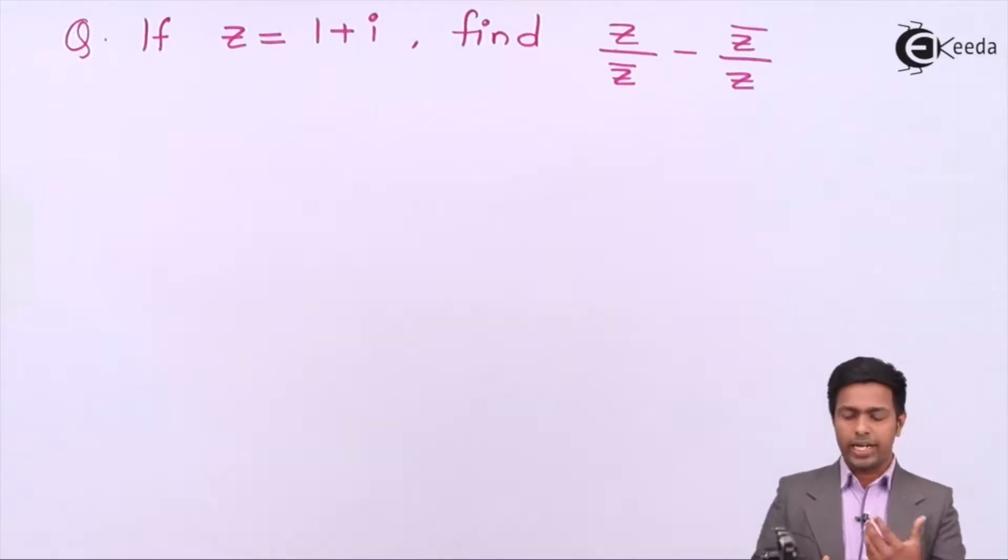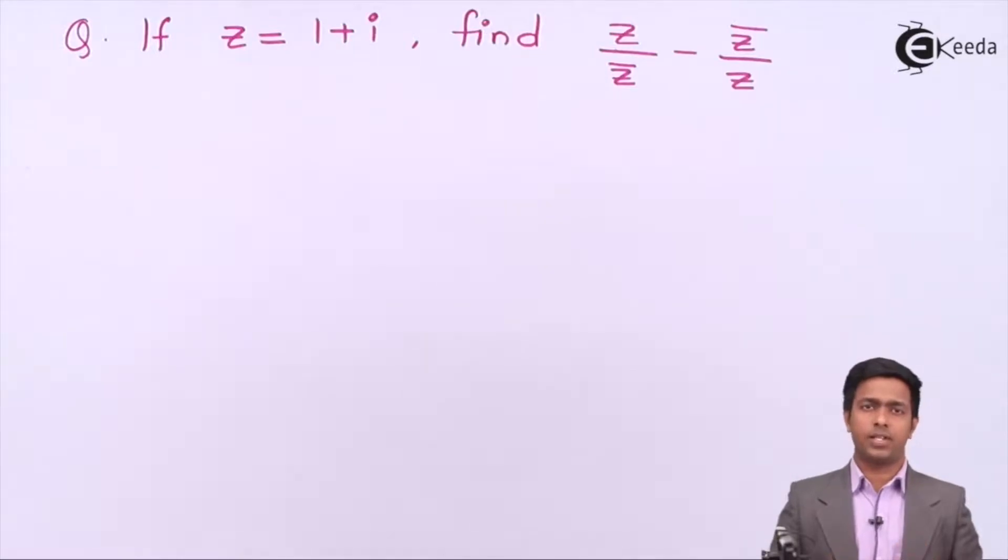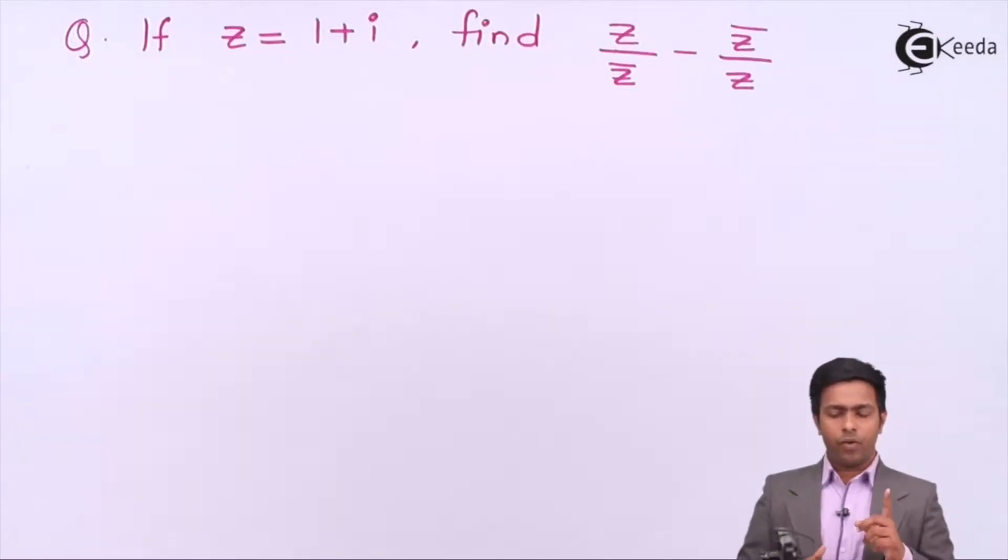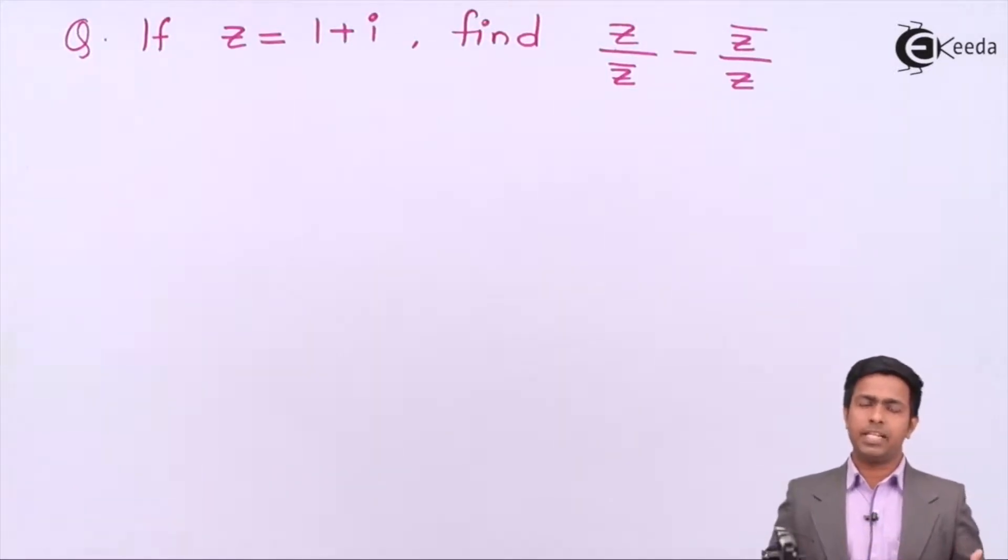To get this value we first know the meaning of the symbol. Z is a complex number, so what is z bar? We have learned in the previous video that z bar is the conjugate of complex number. So if z is 1 plus i, it means z bar is 1 minus i.